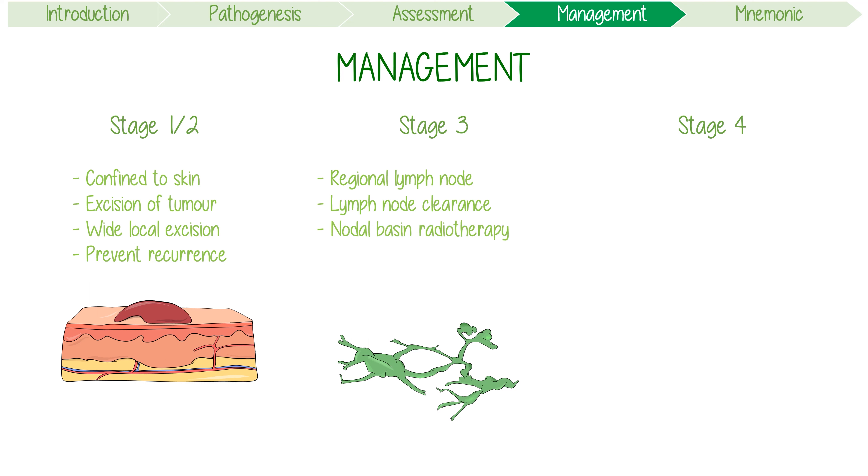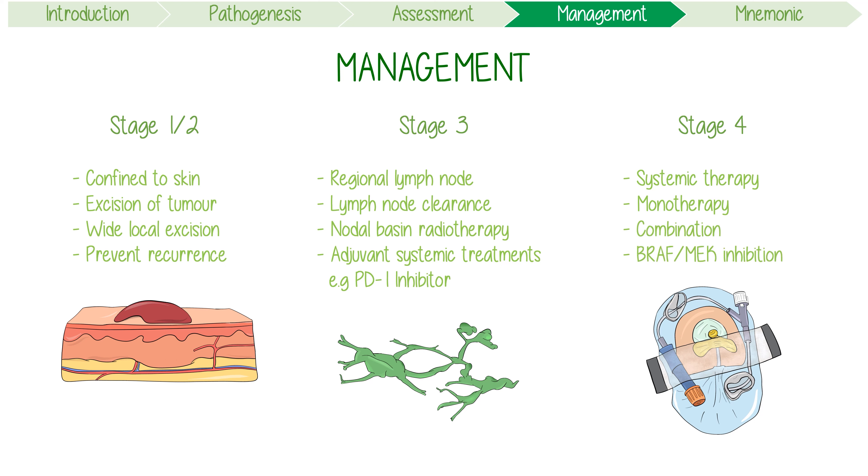Finally, advanced stage 4 melanoma mainly involves systemic therapy with a PD-1 inhibitor monotherapy, immune checkpoint inhibition combination therapy, or BRAF-MEK inhibition for patients with an activating BRAF V600 mutation.